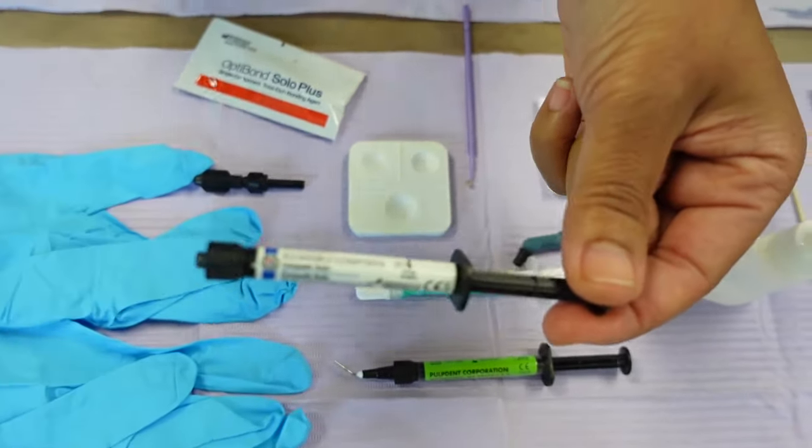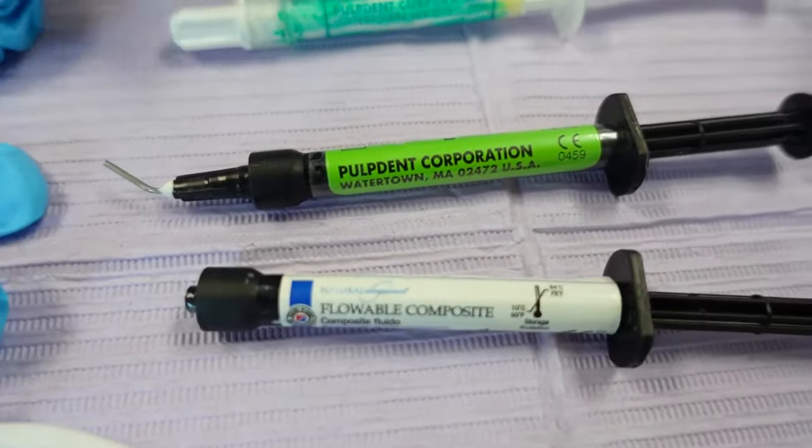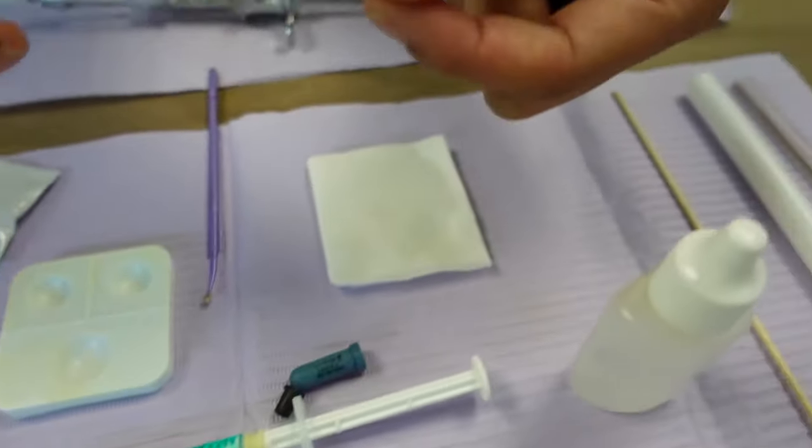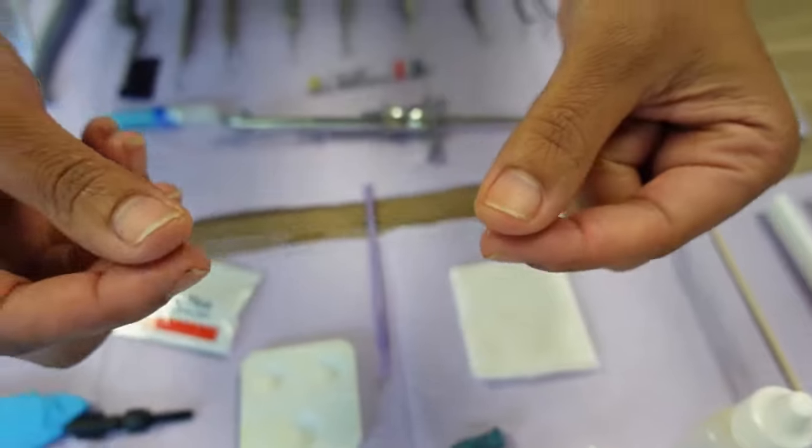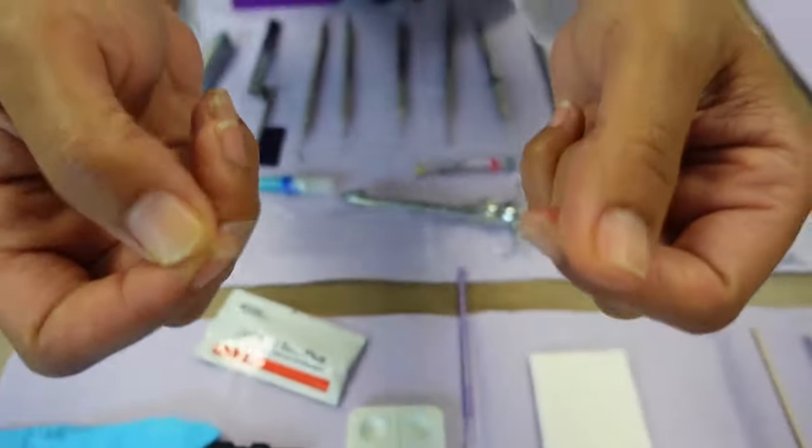Next we have a mylar strip. It's very clear. It goes in between the tooth, especially anterior. These are used on anterior teeth.